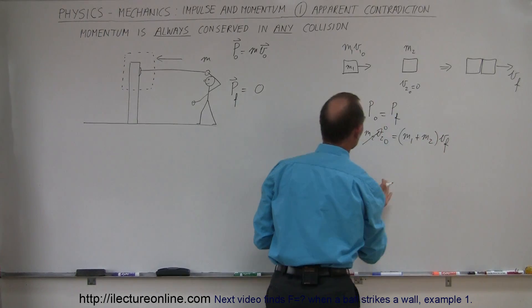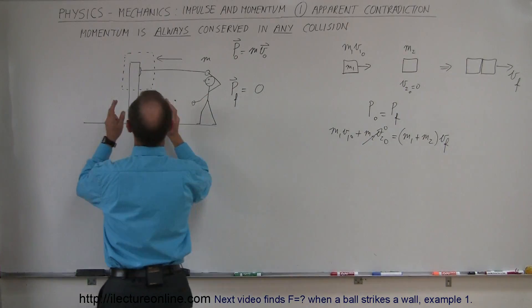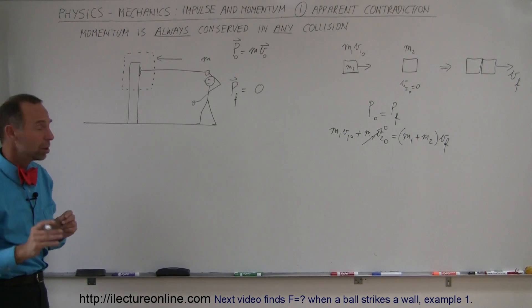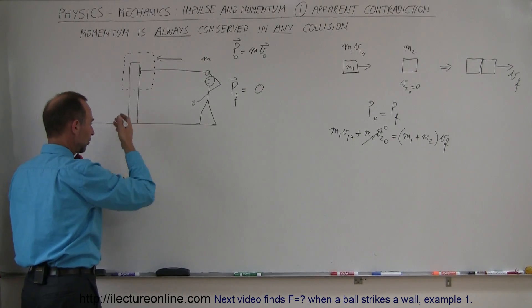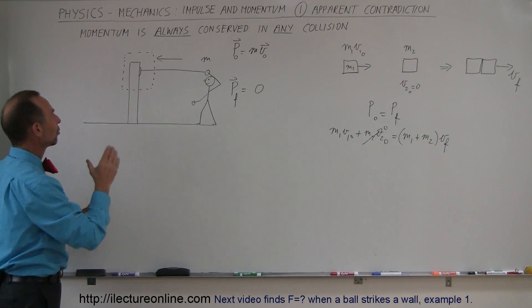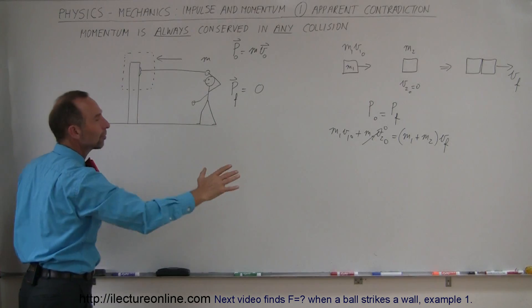So in the same token, M1 plus M2, V final, that should now also count for the snowball and the wall. And it does. The problem is that the wall is connected to the Earth. It's sitting there, solid, cemented into the Earth. And so really, the system is greater than just a snowball and the wall. The system is a snowball and the entire Earth.